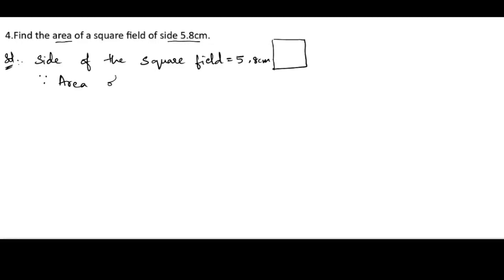Next, we know the area formula. Since area of the square is equals to side into side, that will be 5.8 into 5.8. Let us multiply this. 58 into 58: 8 times 8 is 64, 8 times 5 is 40 plus 6 is 46, 5 times 8...